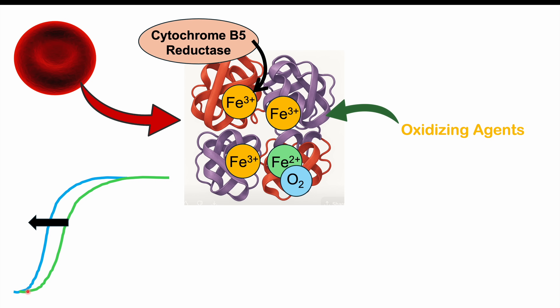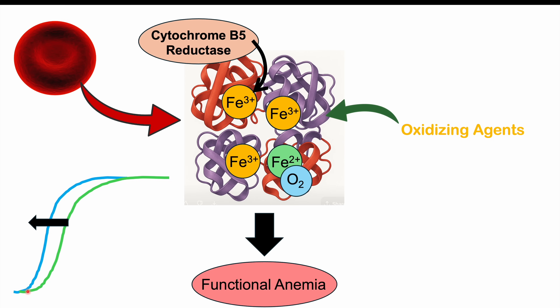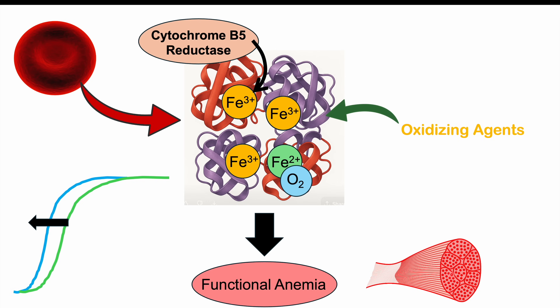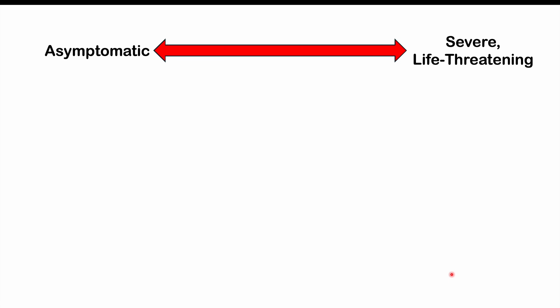This is a problem because hemoglobin is supposed to deliver oxygen to tissues. Ultimately, this leads to a functional anemia. Even though you might have enough hemoglobin floating around, the Fe3+ or oxidized iron isn't holding oxygen, and the remaining reduced iron is holding onto oxygen tighter — so we get functional anemia. Tissues like muscles and other parts of the body are not going to get the oxygen they need.